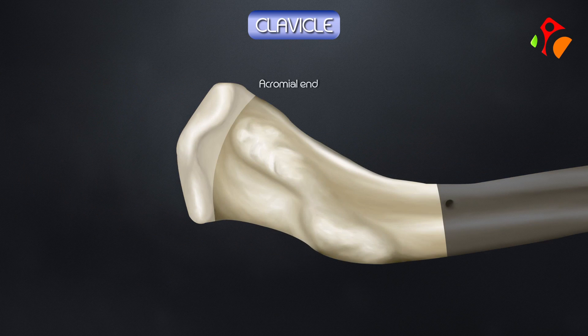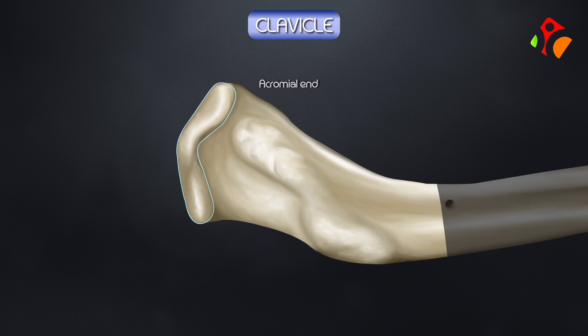The acromial end is flat and has an oval facet which articulates with the clavicular facet on the acromion process of the scapula. The margins give attachment to the capsular ligament of the acromioclavicular joint.